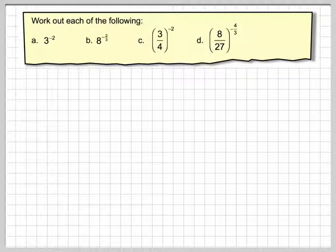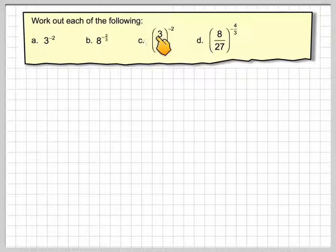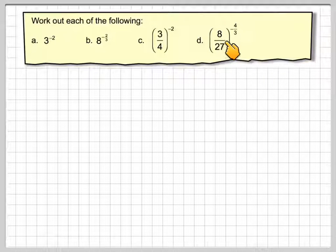In this video we're going to deal with negative indices, so it says work out each of the following. We've got 3 to the minus 2, 8 to the minus 2 over 3, 3 quarters to the minus 2, and 8 over 27 to the minus 4 over 3.